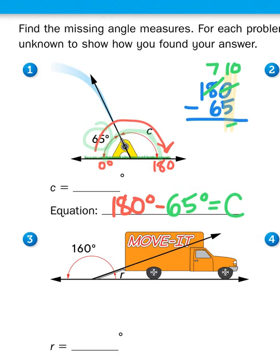Ten minus five is five, seven minus six is one, and one minus zero is one. So the measure of my missing angle is 115 degrees, which I'll put right there.